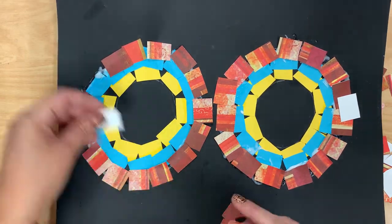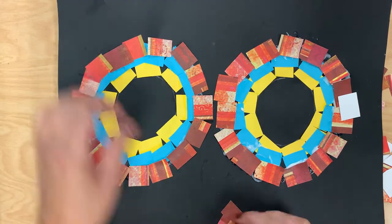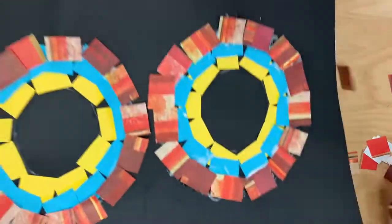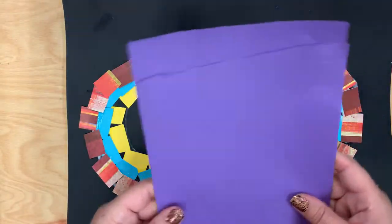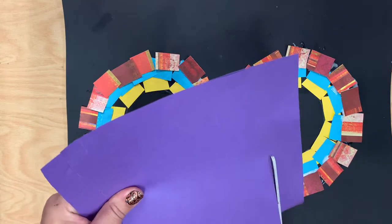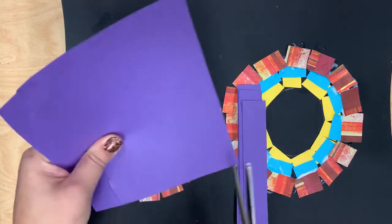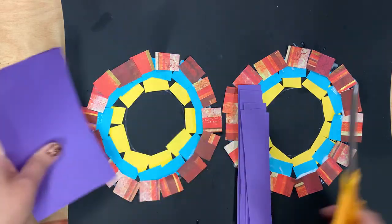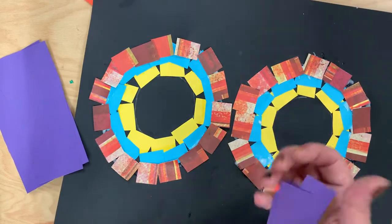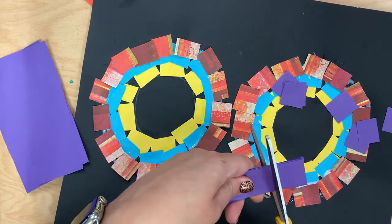Now I'm going to get one more layer of bright colors. So I picked purple this time. Cut them into skinny strips, line them up best I can, cut them into rectangles.